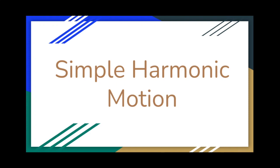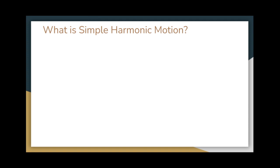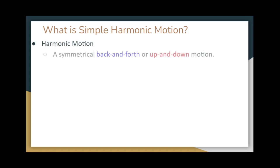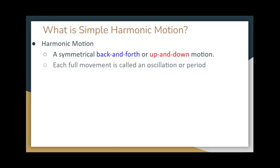Let's get started with these simple harmonic motion notes. Some of you might be asking yourselves, what is simple harmonic motion? Simple harmonic motion is a symmetrical back and forth or up and down motion. We'll talk more about this in a moment to show you some examples of things moving back and forth or up and down.